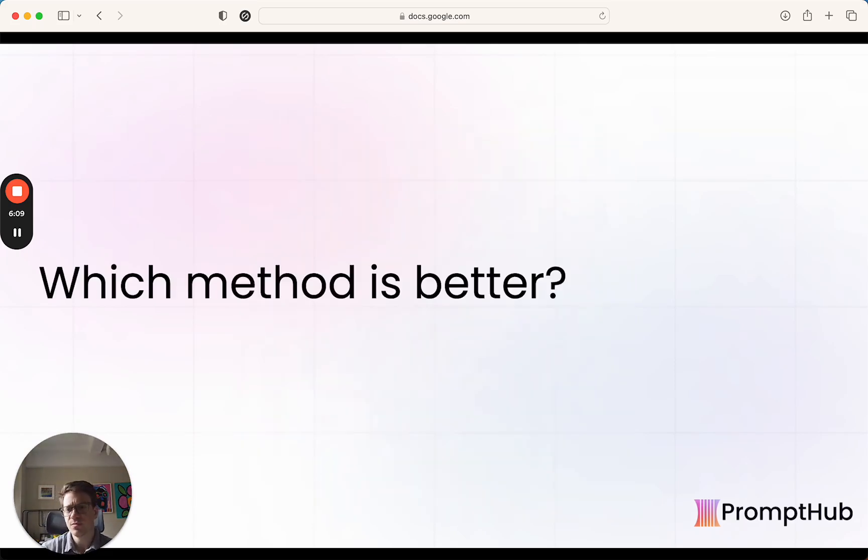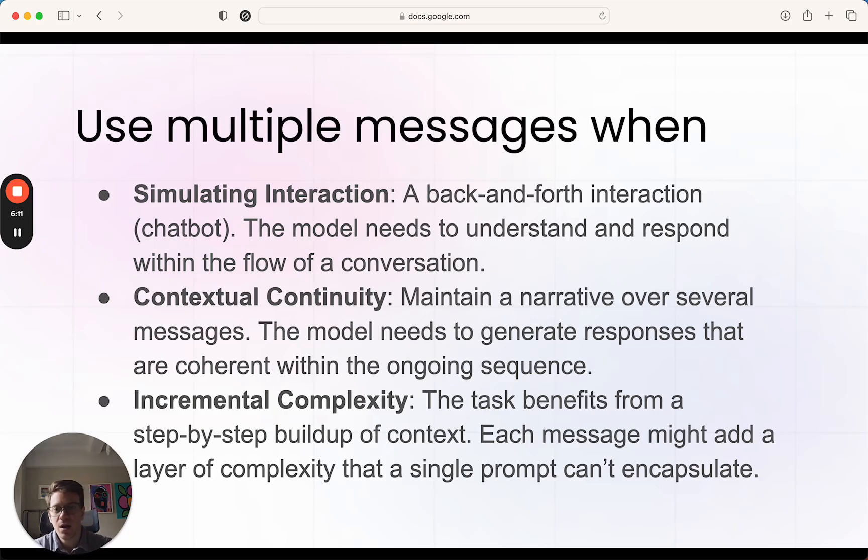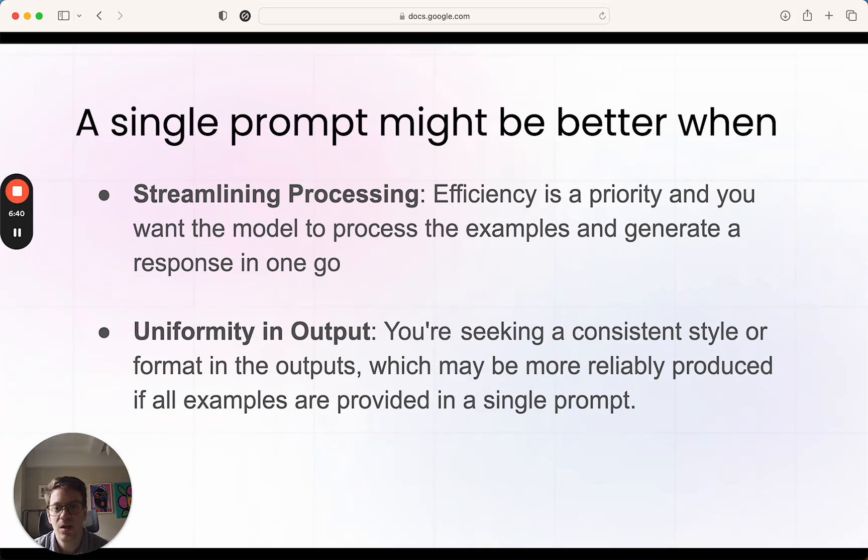In terms of which method is better, it really depends. As with all this stuff, there are trade-offs with each. If you're doing chatbot-based stuff and simulating an interaction, that might be a good use case for multiple messages. If there's contextual continuity, then that would be a good use case when you're building things up over time. Or if you're running into context window issues, that could be a good use case to break it up into multiple messages as well.